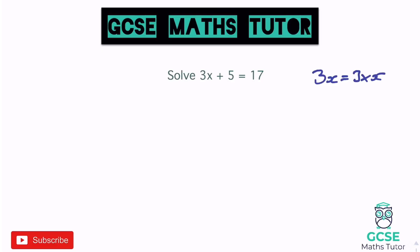The last thing we did was add 5, so the first thing we need to do is get rid of that. Whatever we do to one side, we do to both sides. We subtract 5 from both sides, leaving 3x on the left and 12 on the right.